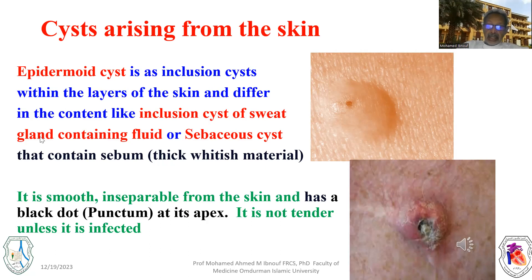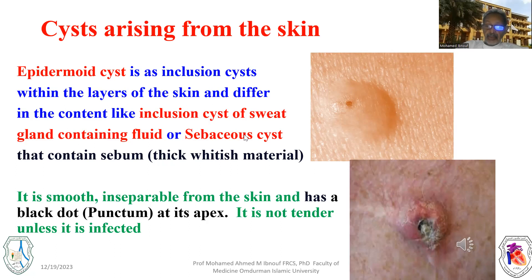The inclusion cyst has different contents like sweat gland inclusion cysts, retention cysts containing fluid, and sebaceous cysts which contain sebum — a thick whitish material. The sebaceous cyst is characterized by a black dot at its apex, called a punctum. Usually it is smooth and rounded, and it is not tender because it is small.